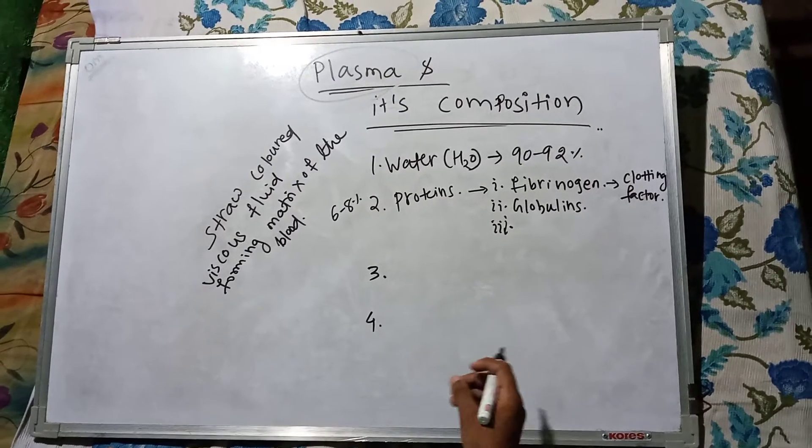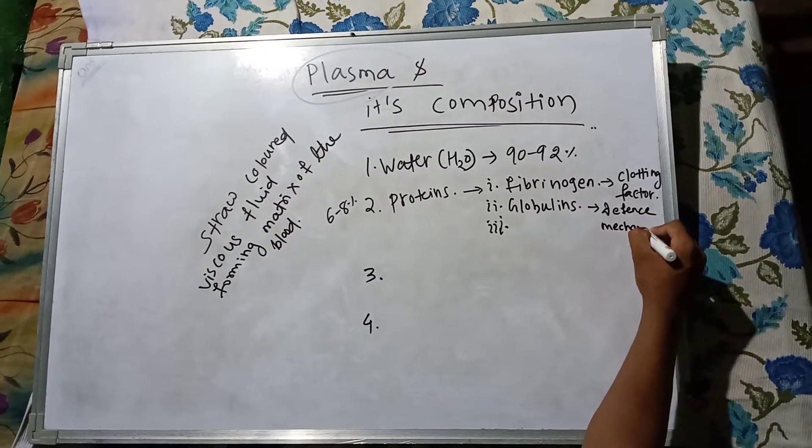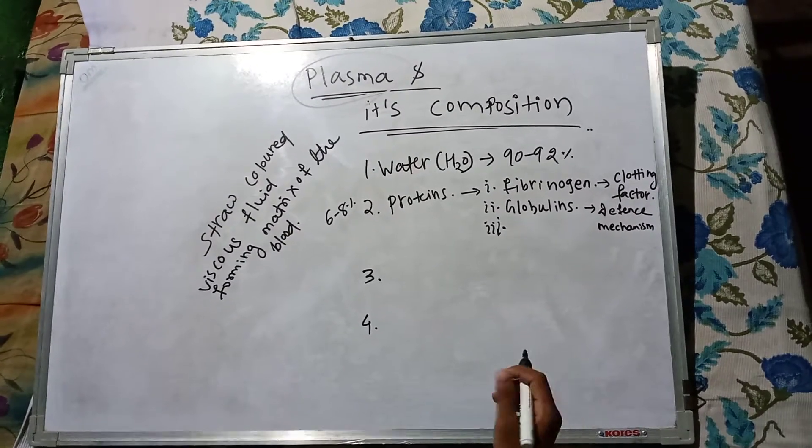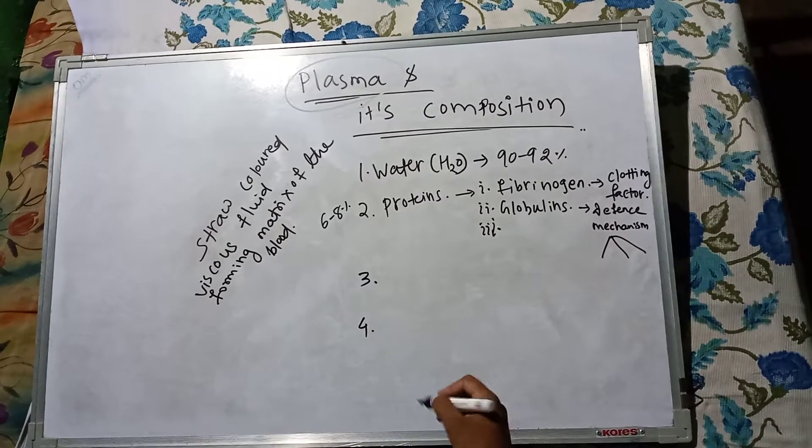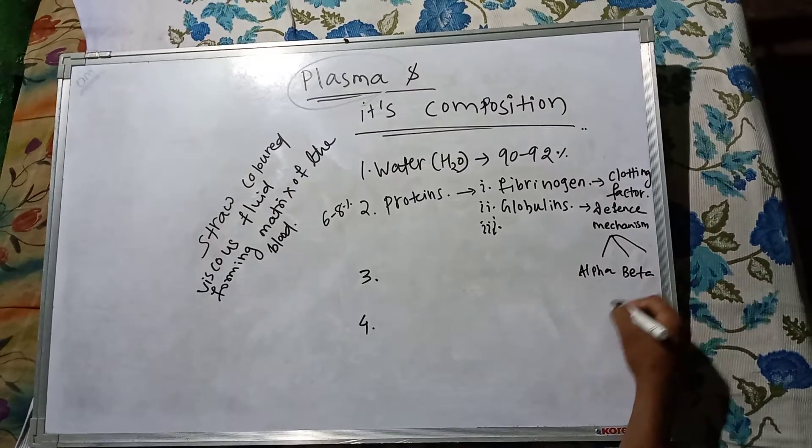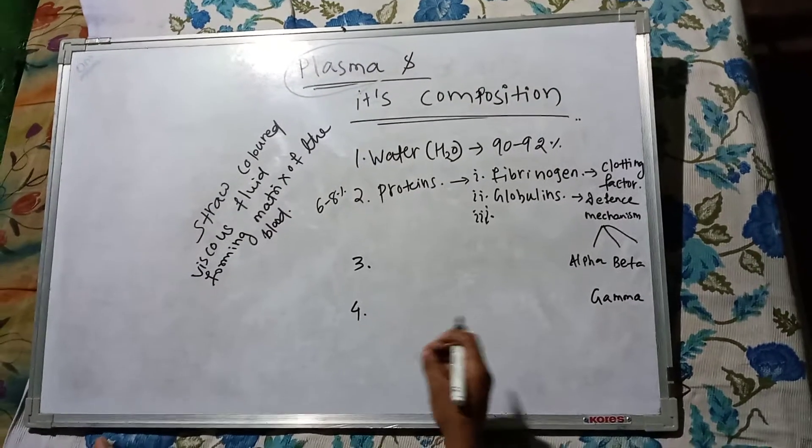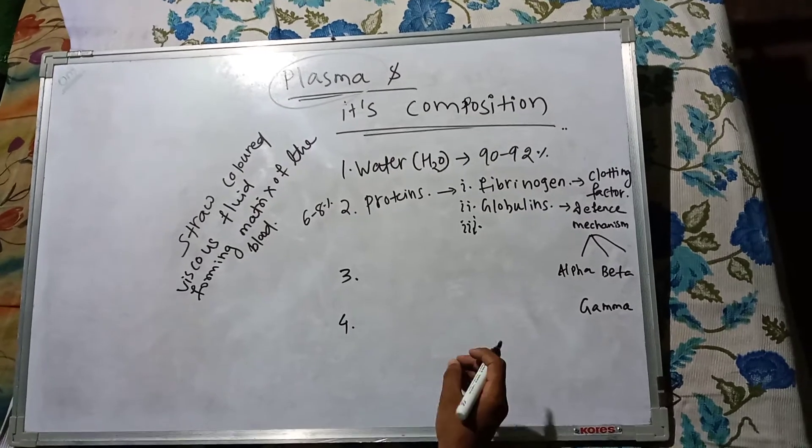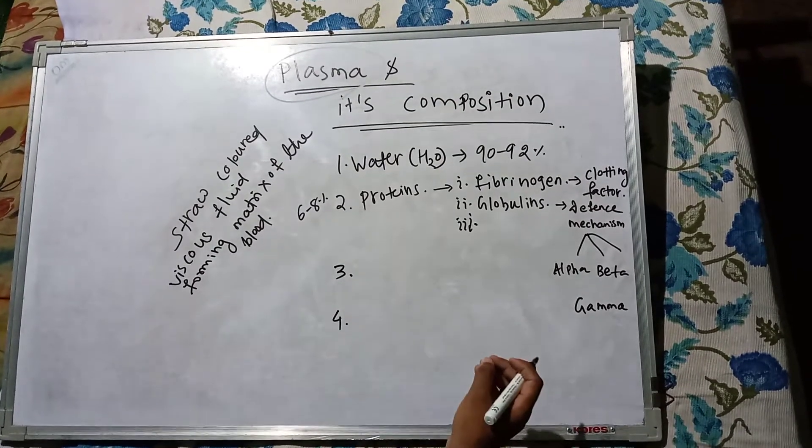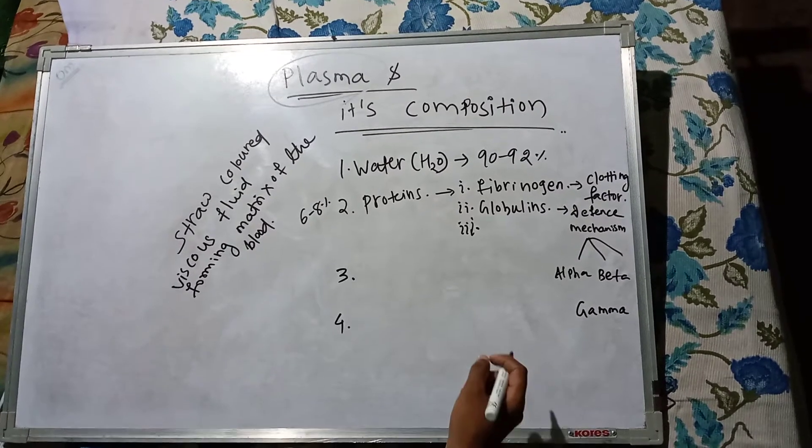Globulins are primarily involved in the defense mechanism of the body, and they are grouped into three subtypes: alpha globulins, beta globulins, and gamma globulins. Gamma globulins are antibodies which function in immune response.